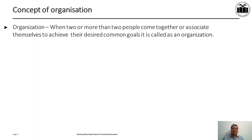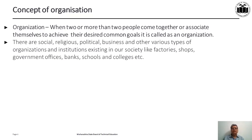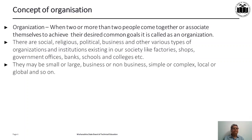We have already defined organization: when two or more people associate themselves to achieve their desired common goals, it is called an organization. Organizations may be social, religious, political, business, or other types — factories, shops, government offices, banks, schools, and colleges. They may be small or large, business or non-business, simple or complex, local or global.